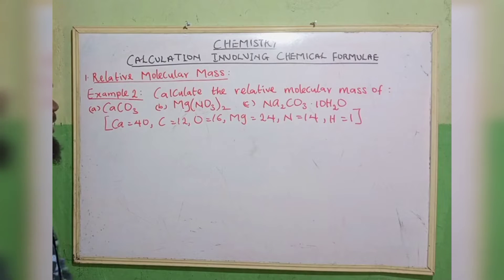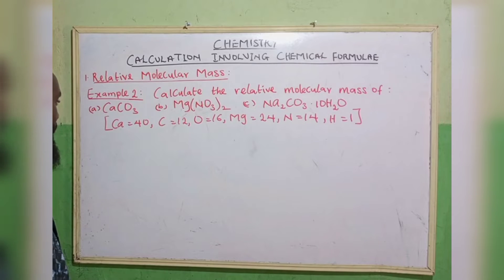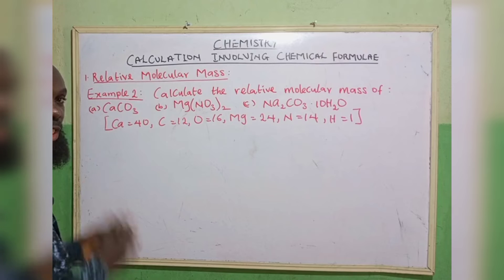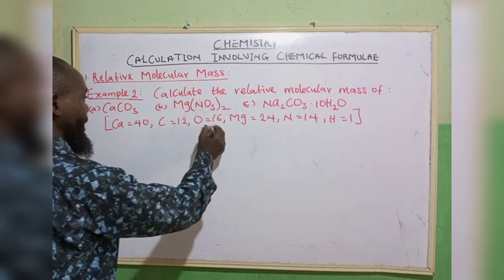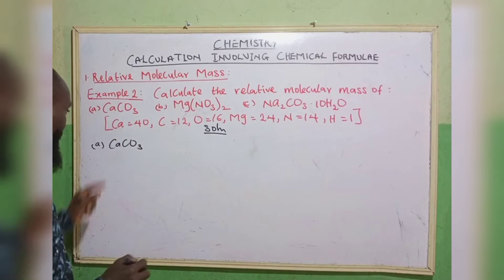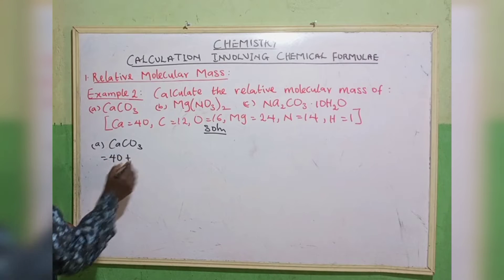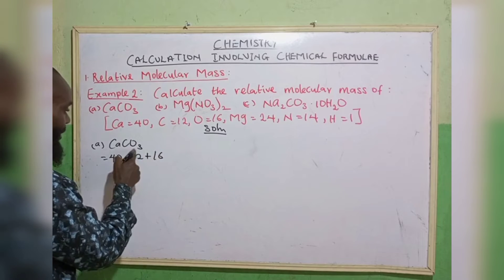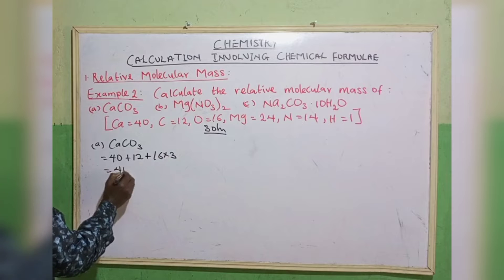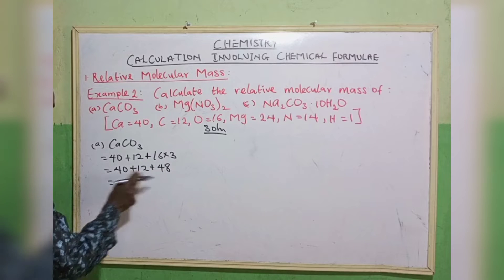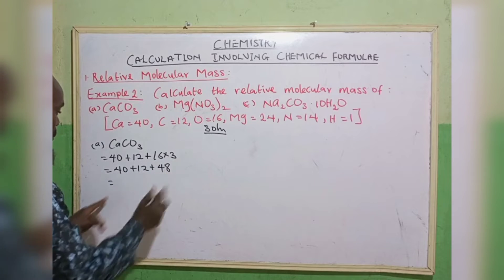Example 2: Calculate the relative molecular mass of these compounds, given the atomic masses of each element involved. Starting with the first one, CaCO₃. The atomic mass of calcium is 40, plus carbon is 12, plus oxygen is 16 multiplied by 3, giving 48. So 40 plus 12 gives 52, plus 48 gives us 100.